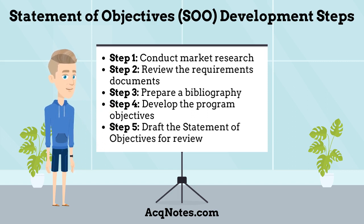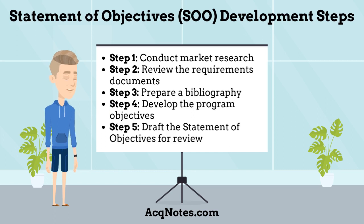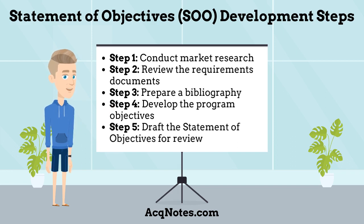Step 3: Prepare a bibliography citing the specific portions of all applicable governing instructions, directives, specifications, and standards with which the program must comply. Step 4: Develop the program objectives by completing a risk assessment that highlights the high and moderate risks in the areas of business, programmatic, and technical, identified on the program based on the requirements document. And finally, Step 5: Draft the Statement of Objectives for review.